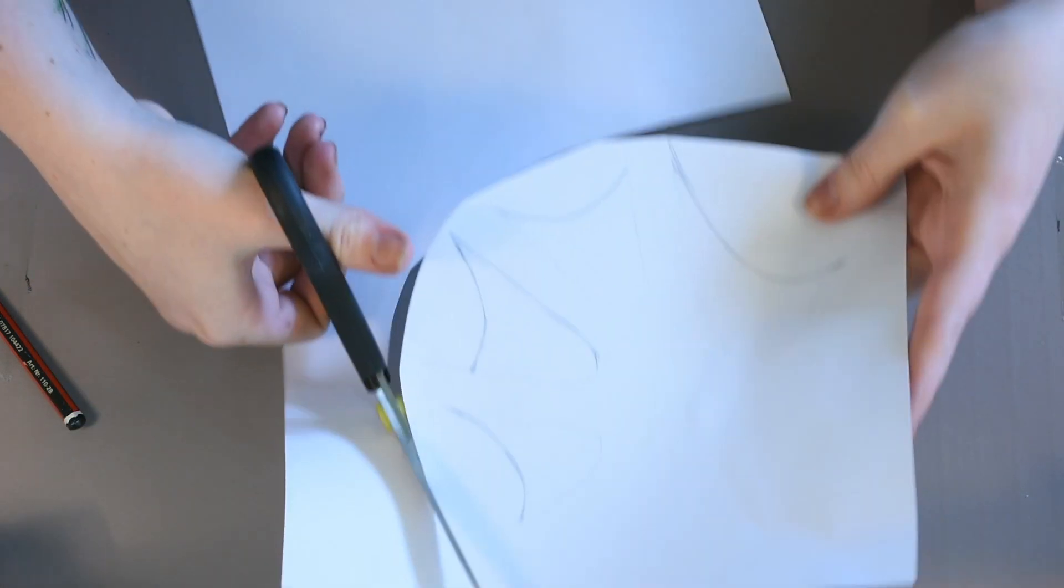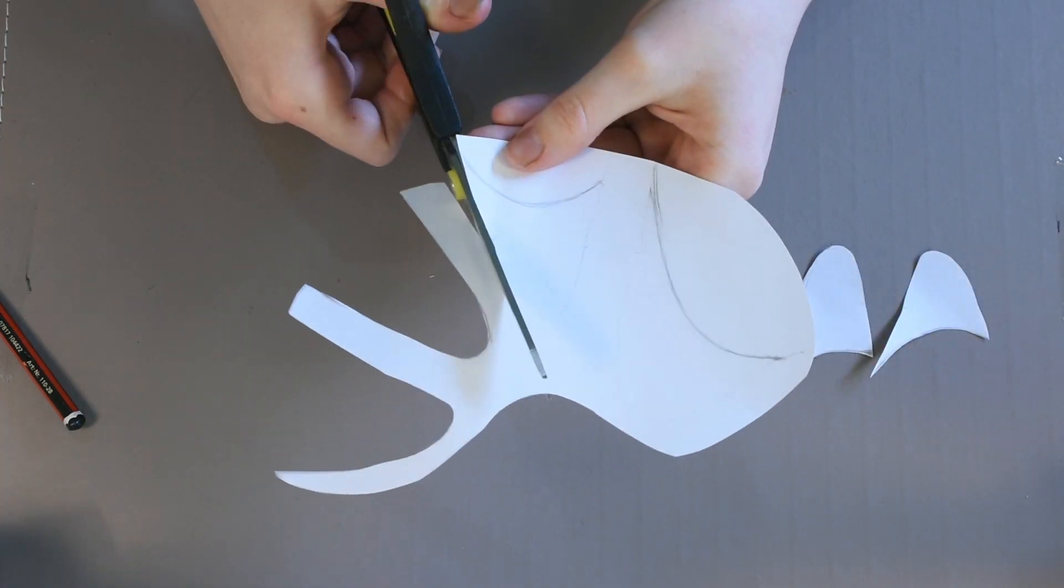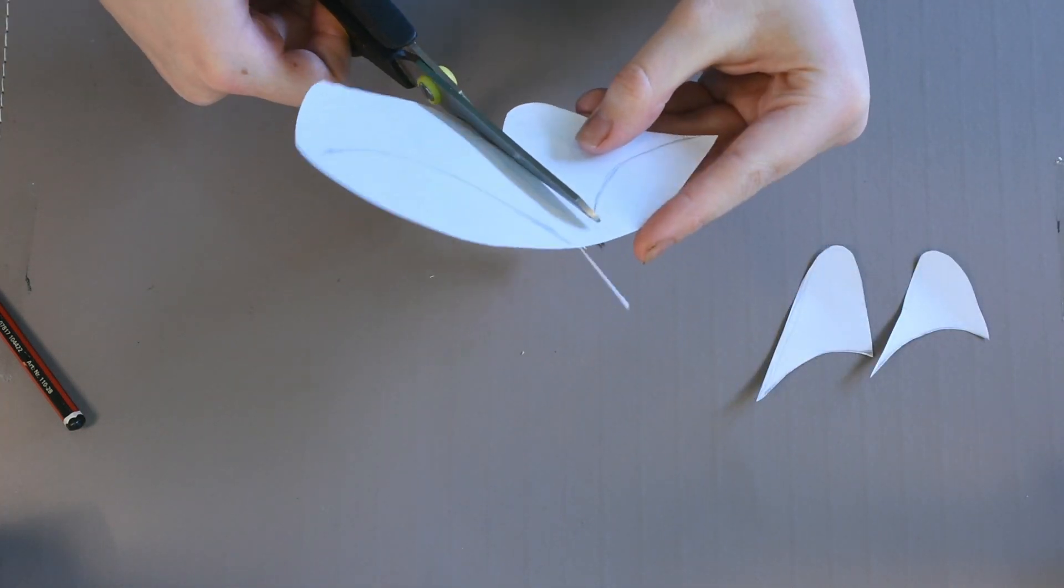Now you just need to carefully cut around all four of your webs. I numbered them so I could easily figure out what ones went where, but this isn't necessary.